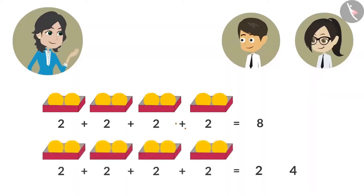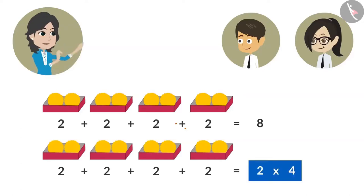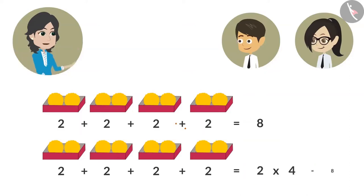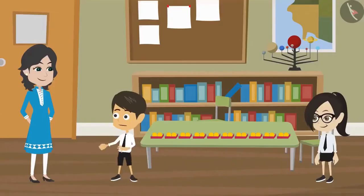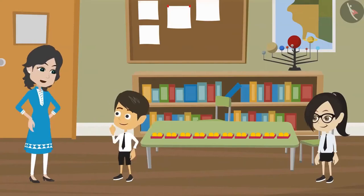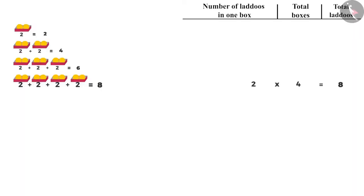Instead of adding, you can multiply two by four. Multiplying two four times means adding two four times. That is why both answers are the same, which is eight. That means if you multiply two by 10, the answer will be the same as if you add two ten times. Yes, Riyanj. In the same way, you can convert the above additions into multiplication.